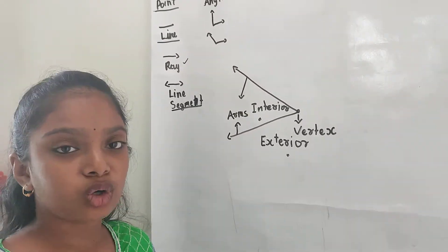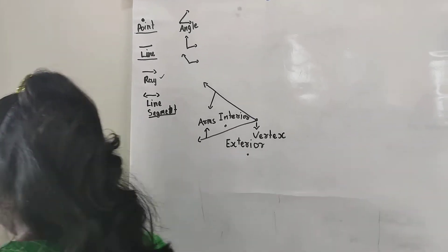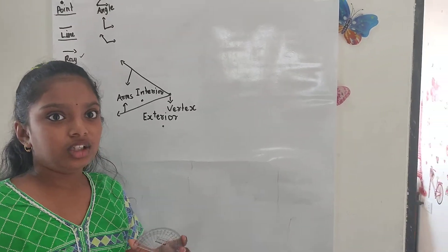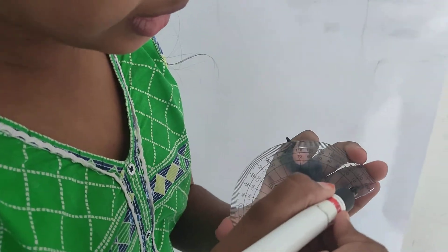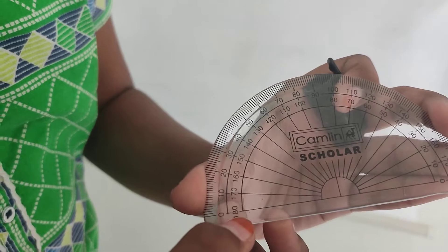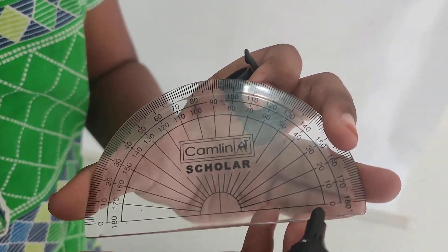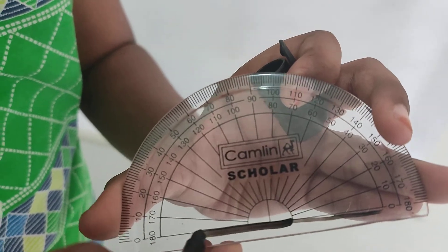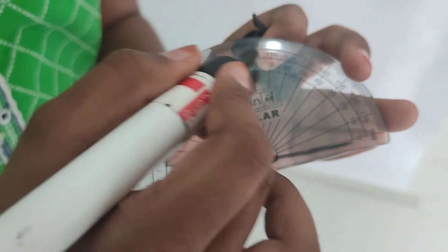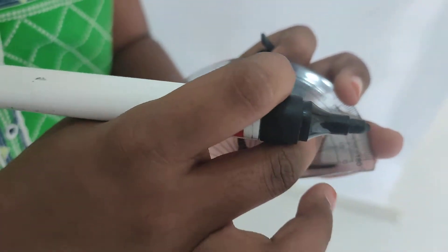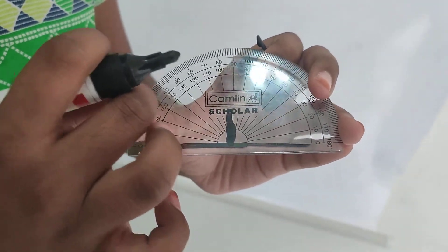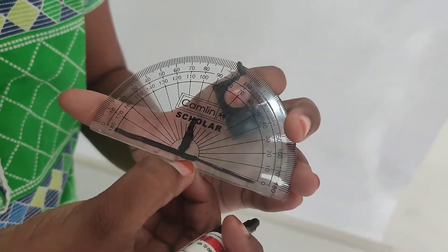Now, let us see how to measure an angle. We need a protractor to measure this angle. We have two lines in it — both lines go from 0 to 180 degrees. This is called the baseline, and the middle line is also used to measure the angle. The measurement is in degrees. There is an inner line and an outer line, and which one to use is based on the angle.